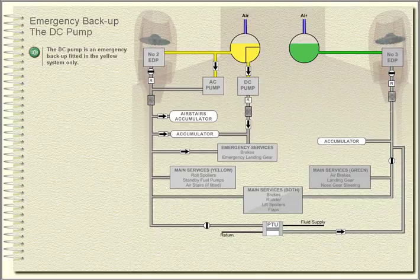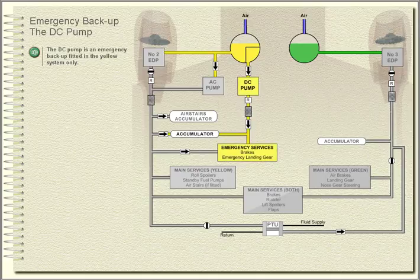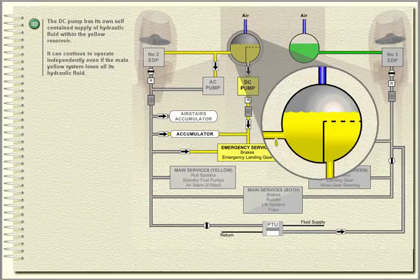Emergency backup — the DC pump. The DC pump is an emergency backup fitted in the yellow system only. The DC pump has its own self-contained supply of hydraulic fluid within the yellow reservoir. It can continue to operate independently even if the main yellow system loses all its hydraulic fluid.